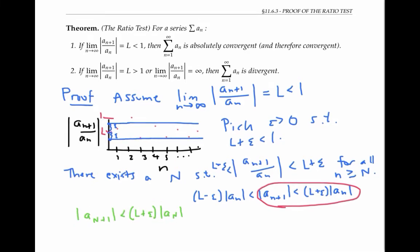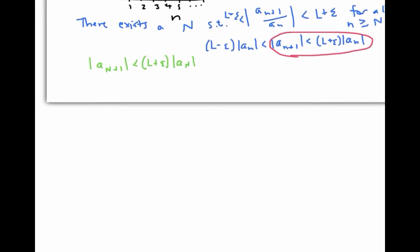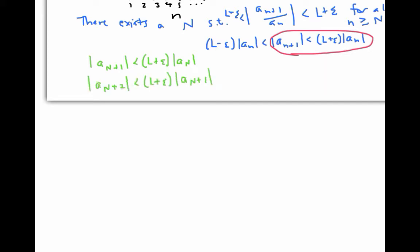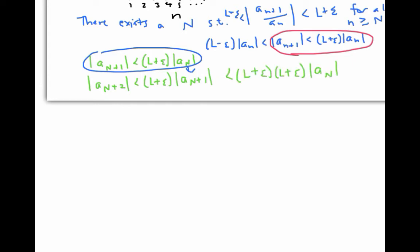The inequality is also true when little n is equal to capital N plus one — I've just plugged in capital N plus one for little n, which gives capital N plus two on the other side. Stringing these two inequalities together and substituting, I get that the absolute value of a sub (capital N plus two) is less than (L plus epsilon) squared times the absolute value of a sub capital N.